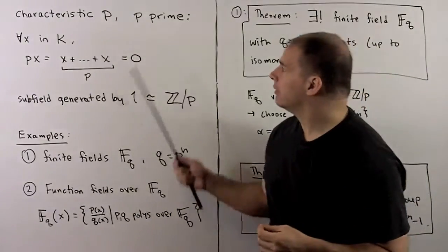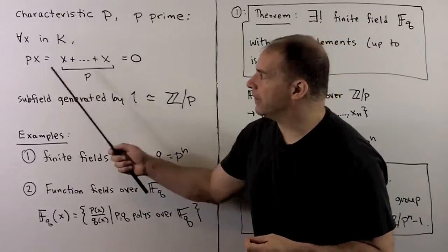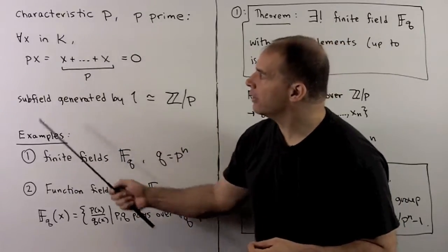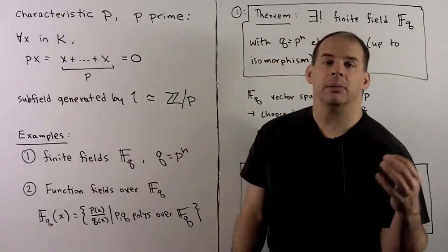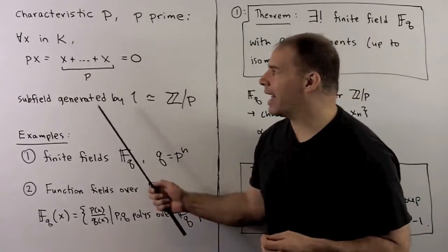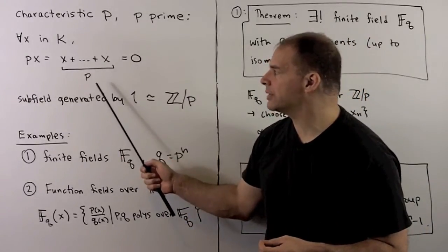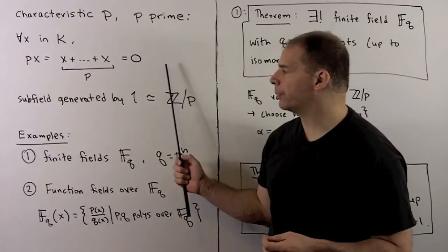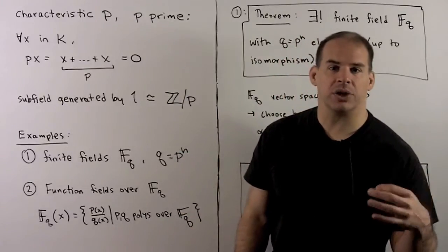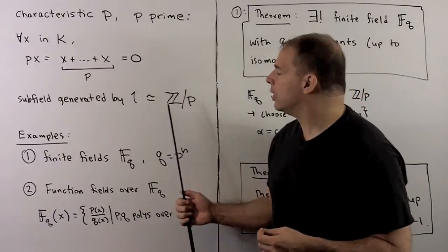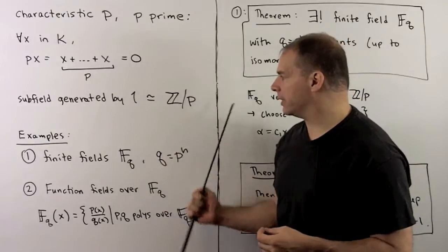Now, recall, p is a prime. We'll say a field has characteristic p if, for all x in the field, p times x (that's the same as adding x to itself p times) is always zero. Then if we consider the subfield generated by one, we get a copy of Z mod p in our field.